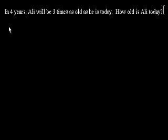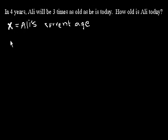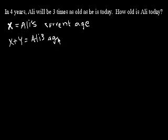Let's say that x equals Ali's current age. If x is Ali's current age, and in four years, how old is Ali going to be in four years? Well, if x is his current age, in four years he's going to be x plus four years old. So x plus four is Ali's age in four years.